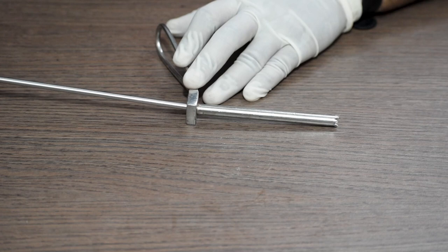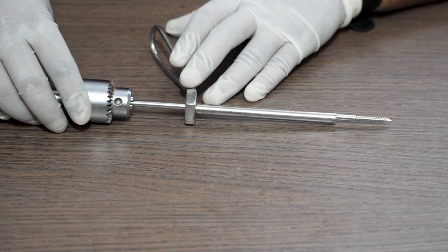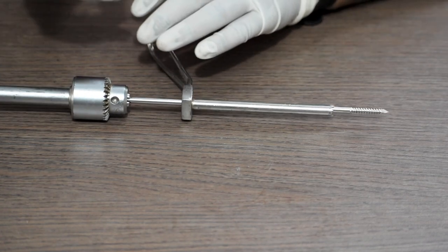Thereafter, we will take the Schanz pin and insert it through the protection sleeve with the help of the tip of the T-handle chuck with the key attachment.